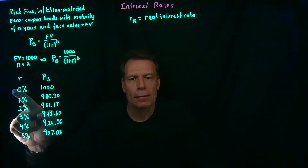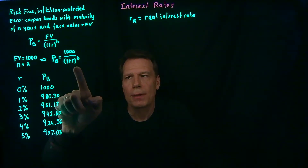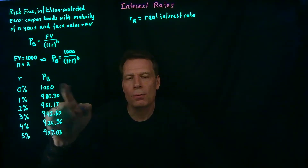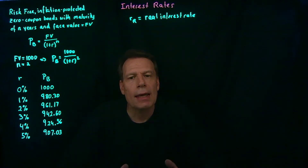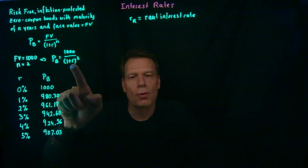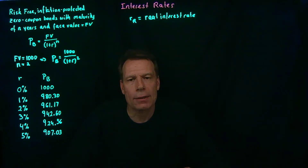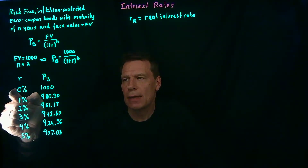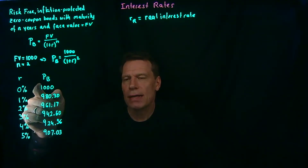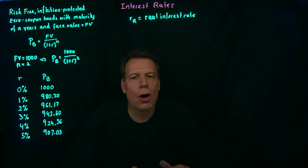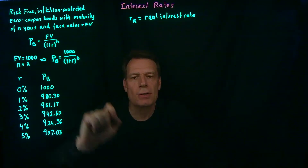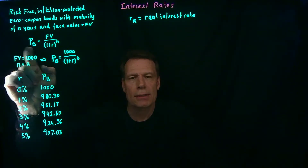If the real interest rate is 0%, we plug a 0 in for r, giving a 1 in the denominator, so the price equals $1,000. If the interest rate is 1%, we plug in 0.01, and the price comes out to $980.30. As we do that calculation for different real interest rates, we see that the price of these bonds falls — and that's always going to be true. Bond prices are inversely related to the interest rate because the interest rate appears in the denominator.